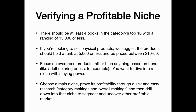Verifying a profitable niche is easy. There should be at least four books in the category's top 10 with a ranking of 15,000 or less. If you're looking to sell physical products, the product should hold a rank of 5,000 or less and be priced between $10 and $50. Focus on evergreen products rather than anything based on trends — you want niches with staying power. Choose a main niche, prove its profitability through quick and easy research, and then drill down further to segment and uncover other profitable ideas.